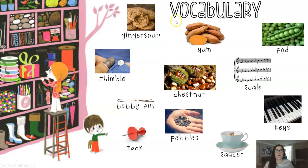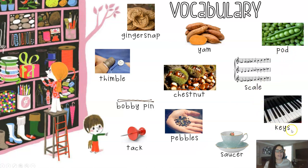Let's take a look at our vocabulary for this week. Say the words with me when I read them aloud: ginger snap, thimble, bobby pin, tack, yam, chestnut, pebbles, pod, scale, keys, saucer. Now what do these words mean? Let's look at each of them together.